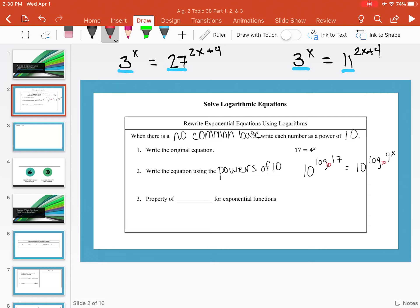And whenever we have 10 to the log base 10 of x, this cancels out and our answer is just the argument. So our answer here is still just 17 equals 4 to the x, so it's balanced. We didn't change the actual value of this equation.